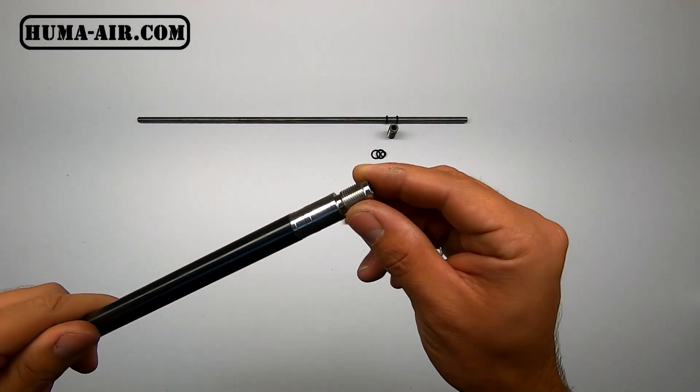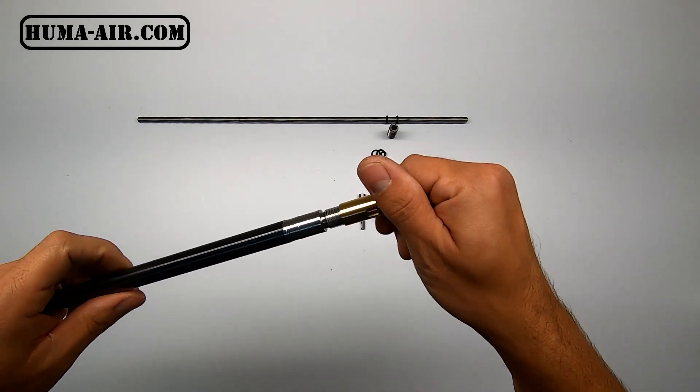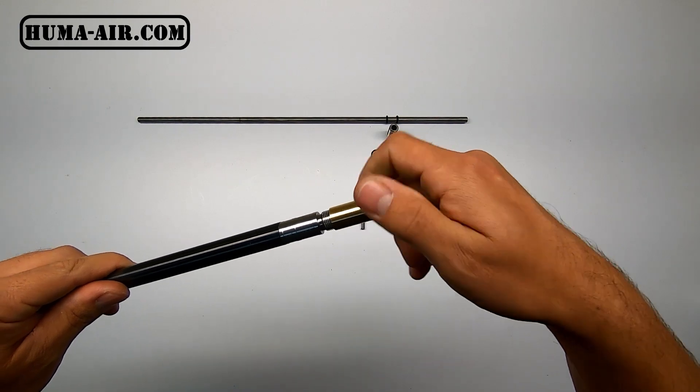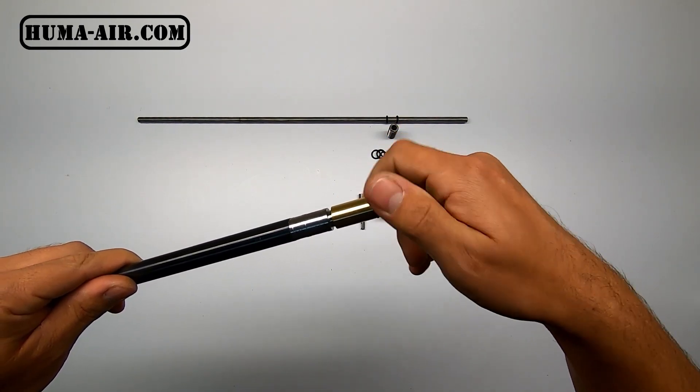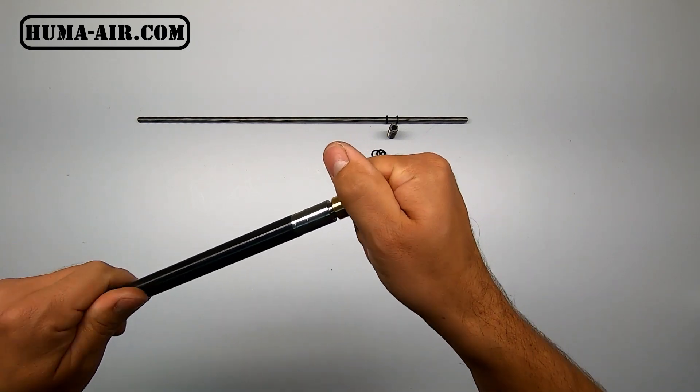So now that the threads on our barrel sleeve are clean, we can take the Yuma air transfer port and make a test fit to see if you can screw it all the way down without any resistance. Just like this. And this one seems to work great.